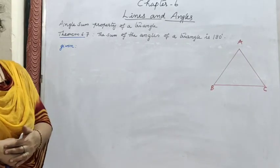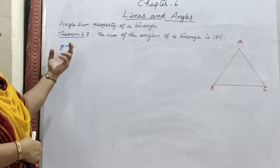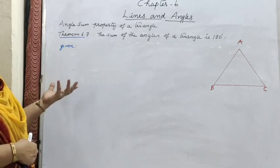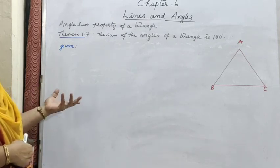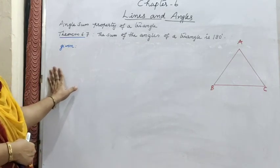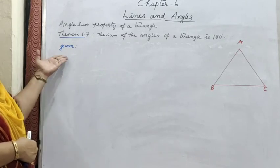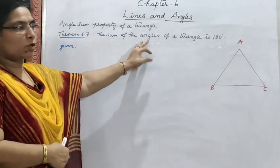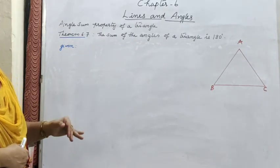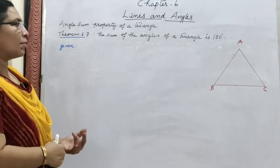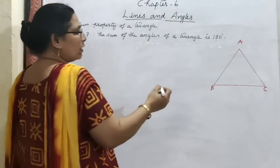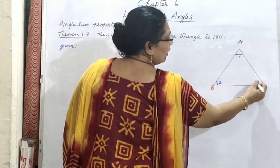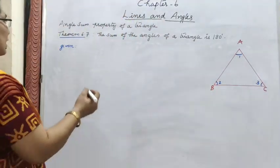Now, angles and property of a triangle — Theorem 6.7: the sum of the angles of a triangle is 180°. We have to prove this as a theorem, following all steps. Given: triangle ABC with interior angles angle 1, angle 2, angle 3. To prove: angle 1 plus angle 2 plus angle 3 equal to 180°.